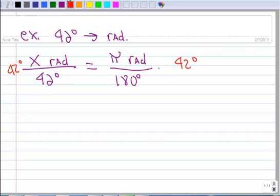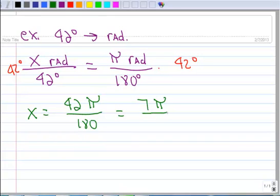I'm going to get x equals 42 pi over 180. And now I could do a couple things. I could just type that in my calculator and get a decimal, or I could reduce 42 over 180. And that's what I'm going to choose to do right now. So I'm going to end up with 7 pi over 30, and this is radians.